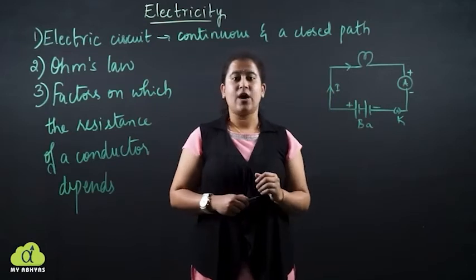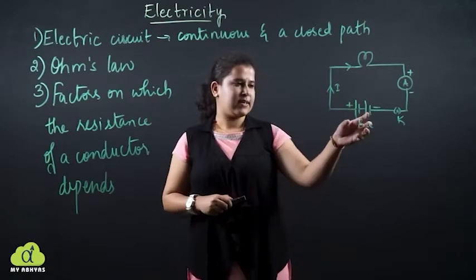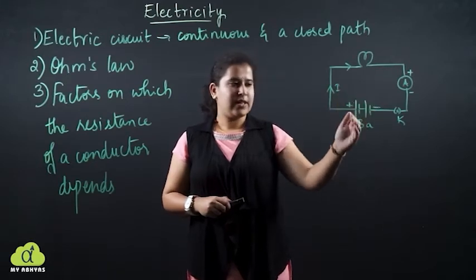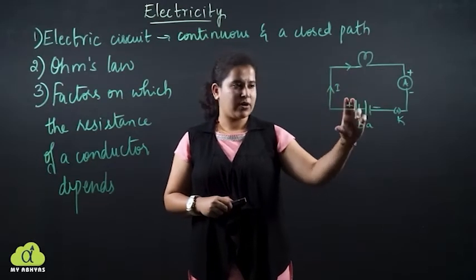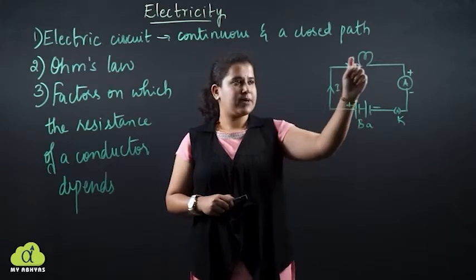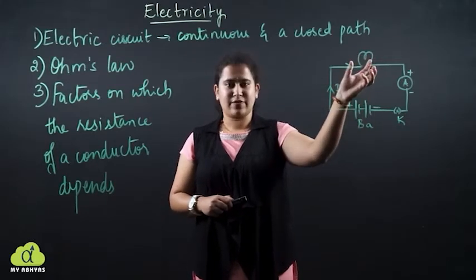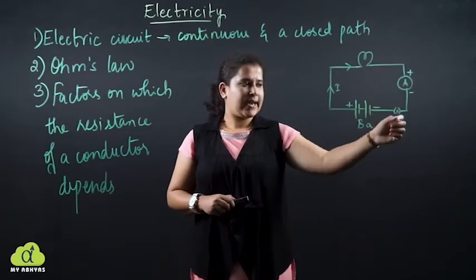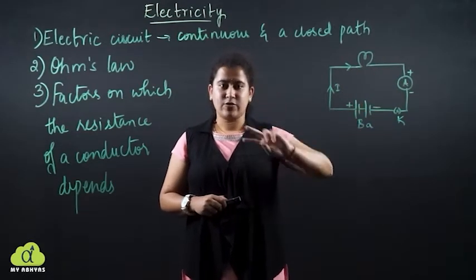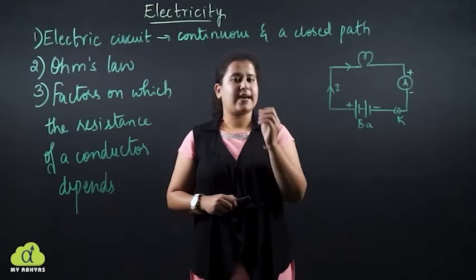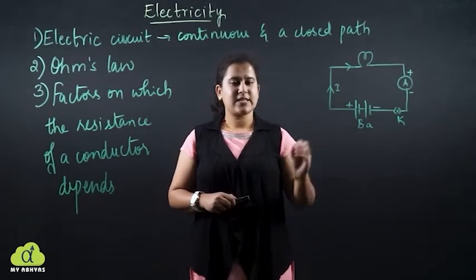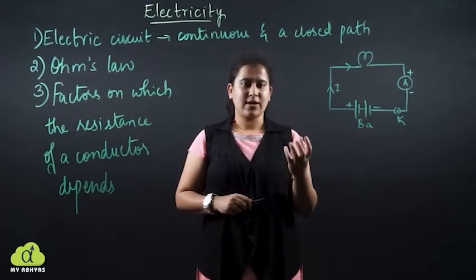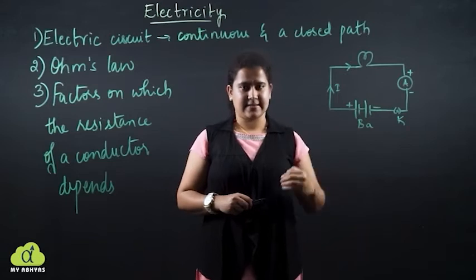Now we will look into the components and how they are denoted. The battery is denoted by two straight lines which are not equal — positive is longer and the negative terminal is shorter. Coming to the bulb, there is one denotation for that. For ammeter, I have put it as A. For the key, there are two types — one is closed and another one is open. We will look into how the schematic diagram, or pictorially, you can represent these components in an electric circuit.